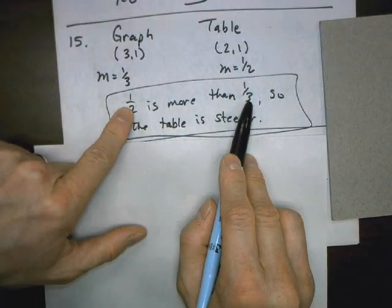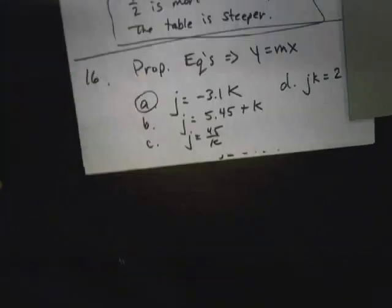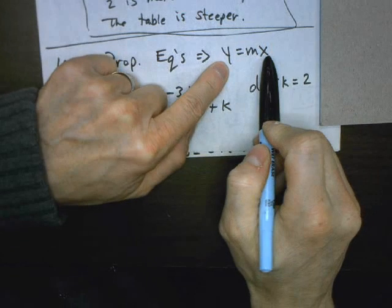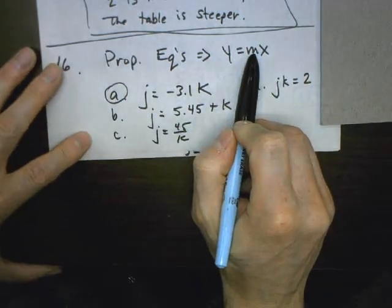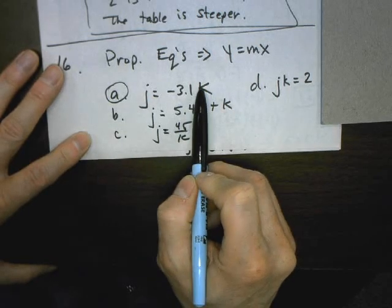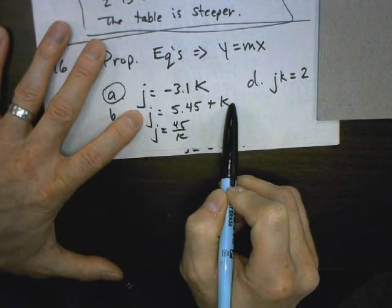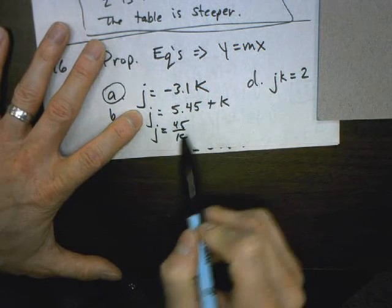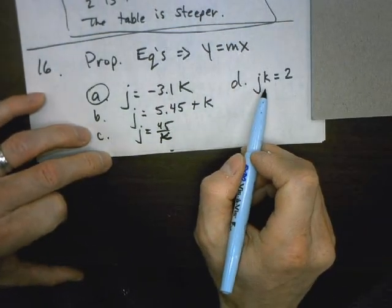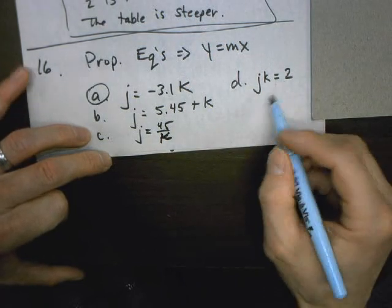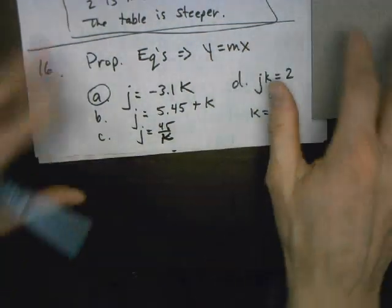Number 16: which equation below is proportional? Proportional means linear — y to the first, x to the first — with no added constant. Expression A matches y equals mx form and is proportional. Expression B is linear but has a plus 5.45 constant, so it's not proportional. Expression C has k on the bottom, meaning a negative exponent — not a line. Expression D appears proportional but dividing by j would put j on the bottom — also not linear. The answer is A.